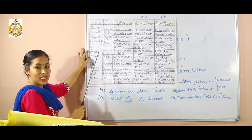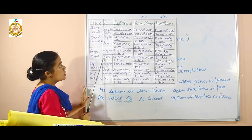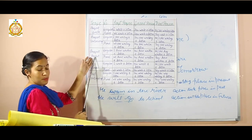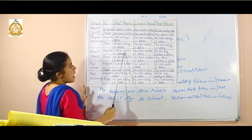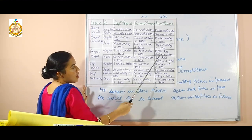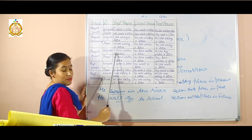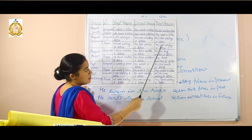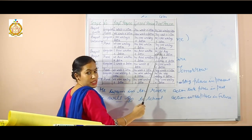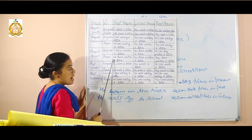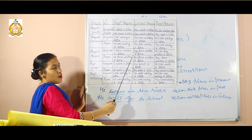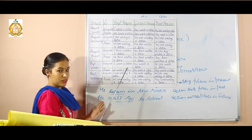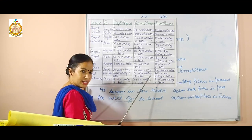Then comes present perfect tense. In present perfect tense, 'I have written a letter.' We use 'have' or 'has' with the third form of the verb. I will use 'have' with 'I' and 'you'. With 'he' or 'she', I will use 'has'. We always use the third form of the verb in present perfect tense.